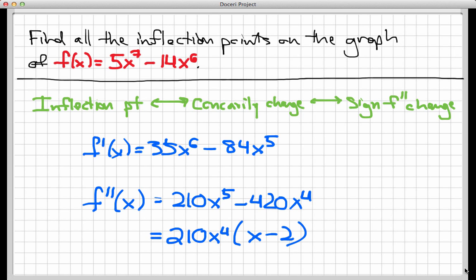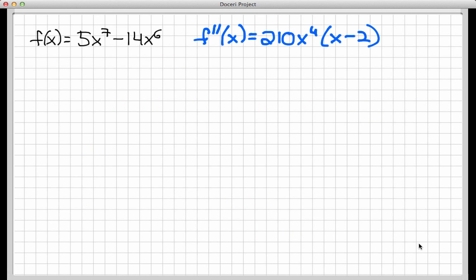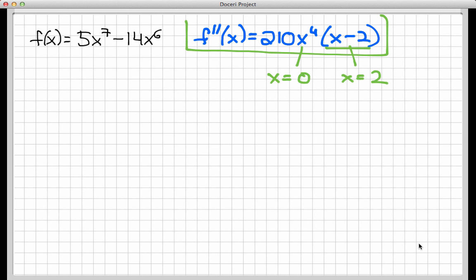We're going to use this fully factored form of f double prime to find the inflection points. We're interested in where f double prime is positive and where it is negative, especially places where that sign changes. To find those areas, it's helpful first to find where f double prime equals 0. Looking at the factored form, f double prime equals 0 when x to the 4th equals 0 — so x equals 0 — or when x minus 2 equals 0 — so x equals 2. Those are the two places where f double prime equals 0.